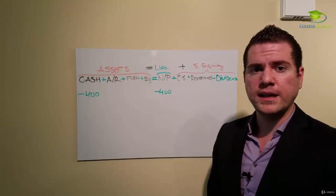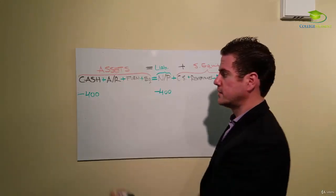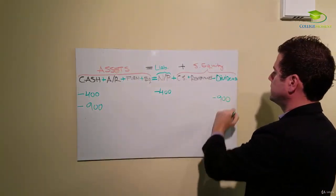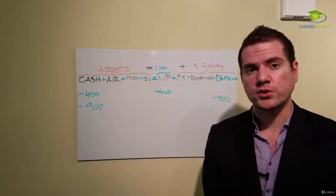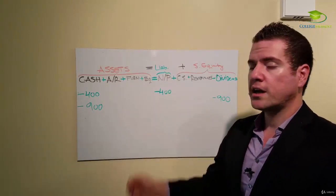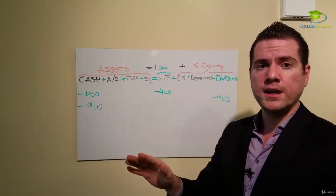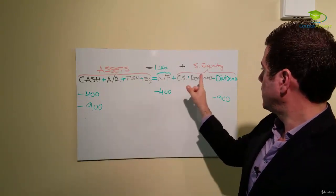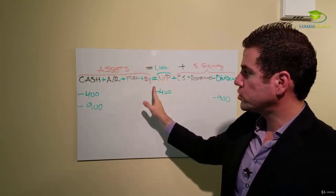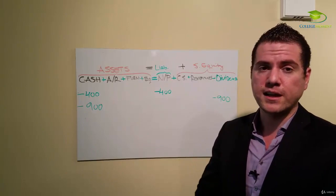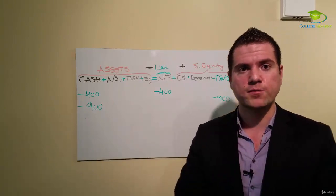If we paid 900 cash dividends, then we paid the cash 900 and then dividend 900. Equation balances. The key concept here is that at least two accounts will be affected with every accounting transaction, and the equation will always, always balance. If it doesn't, there is something wrong. Thank you for watching.